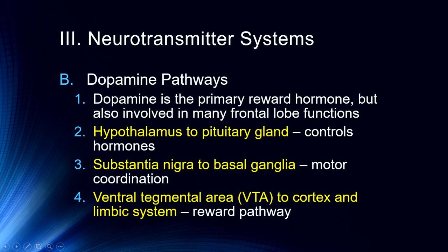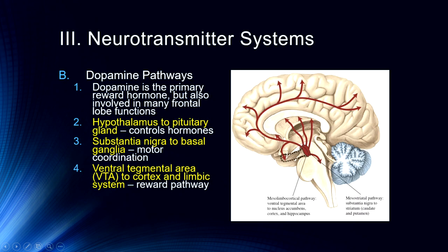Interestingly, we will also talk about how executive functions such as working memory can exert top-down control over the reward pathway, which will be very important when we get to working memory and executive functions. Here's a look at these dopamine pathways: we have the mesolimbic pathway coming from the ventral tegmental area to the nucleus accumbens — the primary reward center — as well as the hippocampus memory centers. Then we have the mesostriatal pathway from the substantia nigra to the basal ganglia, caudate and putamen, and the mesocortical pathway.